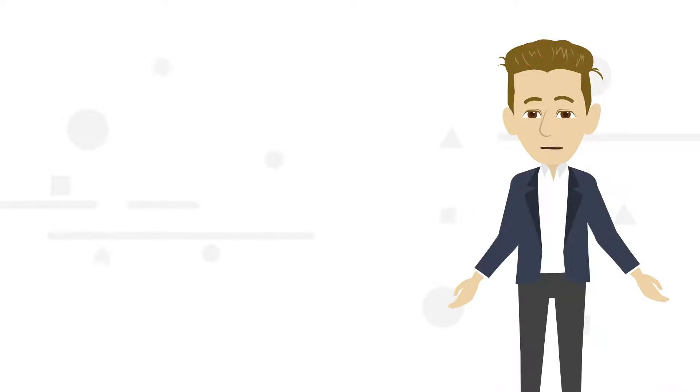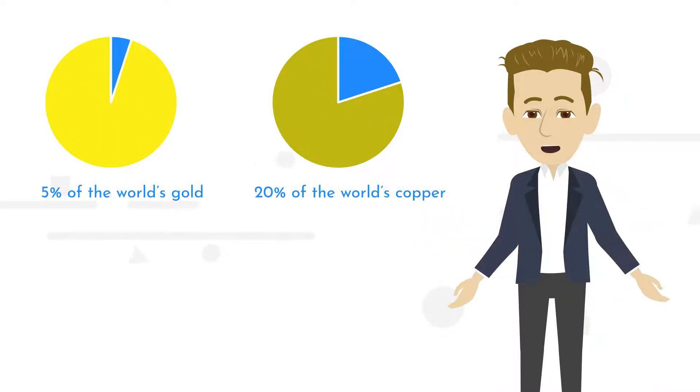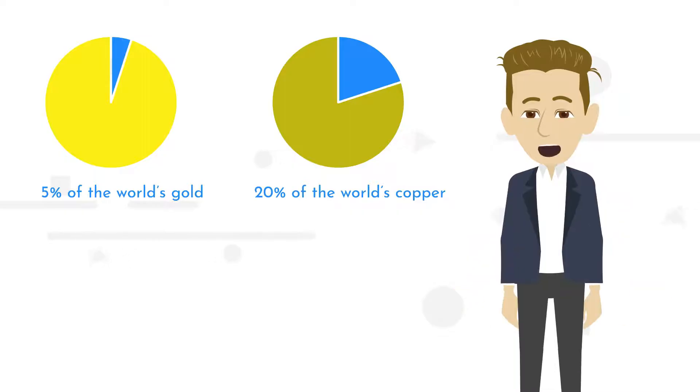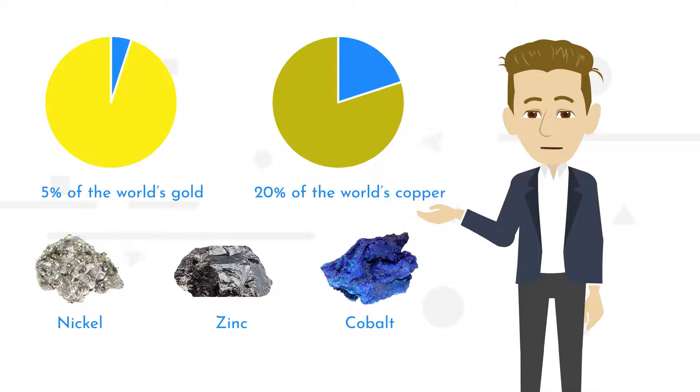Currently, biomining is used to produce 5% of the world's gold and 20% of the world's copper. But it can also be used to mine base metals such as nickel, zinc, cobalt, and other rare earth elements.